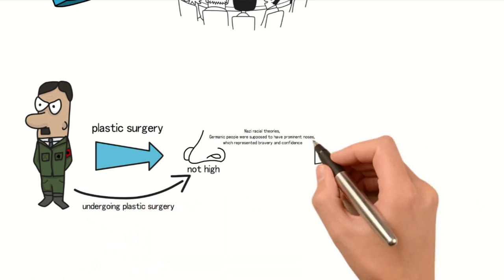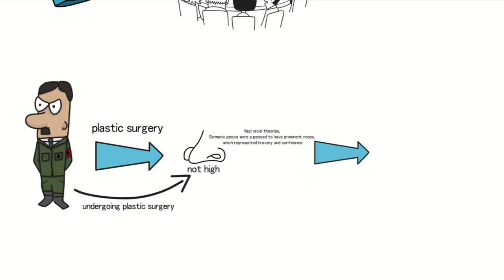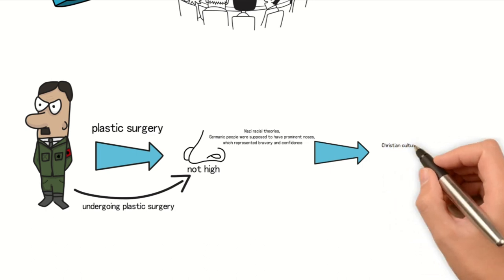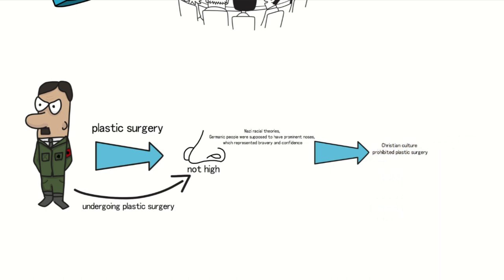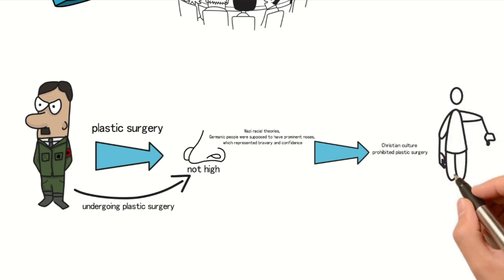However, this decision presented another problem. In the Europe of that time, Christian culture prohibited plastic surgery. If the public found out that their leader's nose was heightened through surgery, it would diminish Hitler's authority in the eyes of the Nazi populace.